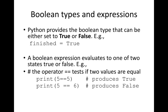We'll first look at boolean types and expressions. Python provides the boolean type that can be either set to True or False. The boolean expression evaluates to one of two states: true or false. If you have two equal operators, it tests if two values are equal. For example, print(5 == 5) produces True, and print(5 == 6) produces False.